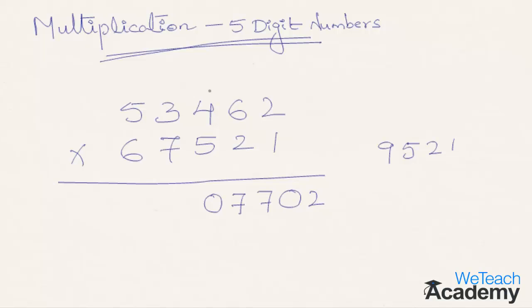Step six, consider 4 digits from left: 5 into 2 is 10, plus 6 into 6 is 36; 10 plus 36 is 46, plus 3 into 5 is 15, plus 7 into 4 is 28; 46 plus 15 plus 28 is 89, plus 9 carried forward gives 98. Write 8, carry 9. Step seven, consider 3 digits: 5 into 5 is 25, plus 6 into 4 is 24; 25 plus 24 is 49, plus 7 into 3 is 21; 49 plus 21 is 70, plus 9 carried forward gives 79. Write 9, carry 7.